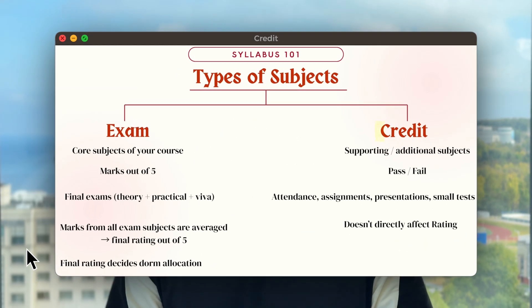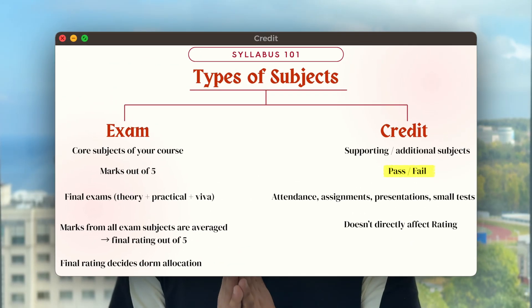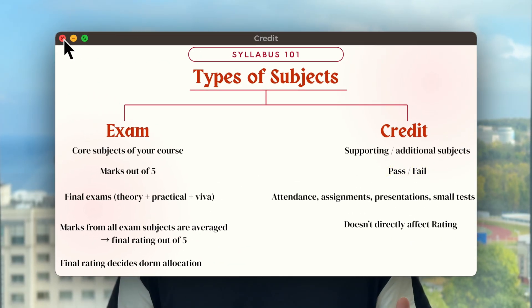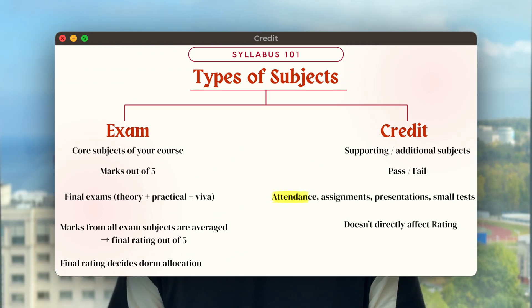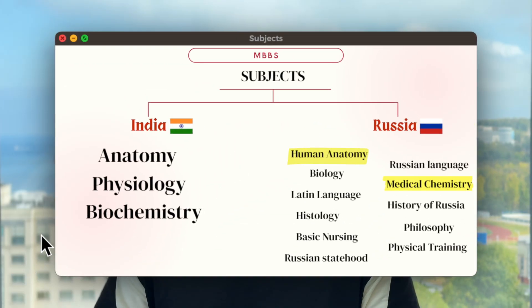Credit subjects are the additional subjects in your syllabus. They are graded just pass and fail — you just need to meet the basic criteria and you will pass. For passing these subjects, you need to attend classes, do assignments, make presentations, and small tests are conducted. Importantly, credit subjects do not affect your overall rating. Also, subjects differ from university to university.